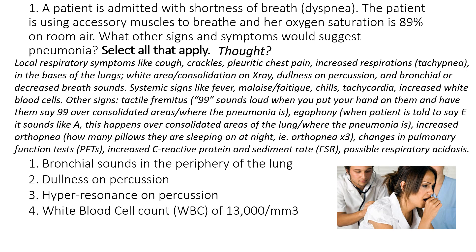If they get sent for pulmonary function tests, you might expect a decreased forced expiratory volume, FEV, because it may be more difficult for them to exhale. Or maybe they have increased residual volume, meaning they can't exhale all the air out, so the RV would increase — and those are usually more significant in older adults. In the labs, besides the white blood cell count, we might see an increased C-reactive protein and sedimentation rate, also called the ESR. Those are both elevated when the immune system is active. And if it's really bad, you could have a possible respiratory acidosis if CO2 is being blocked and they can't exhale very well.